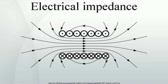A capacitor has a purely reactive impedance which is inversely proportional to the signal frequency. A capacitor consists of two conductors separated by an insulator, also known as a dielectric. At low frequencies a capacitor is open circuit, as no charge flows in the dielectric. A DC voltage applied across a capacitor causes charge to accumulate on one side; the electric field due to the accumulated charge is the source of the opposition to the current. When the potential associated with the charge exactly balances the applied voltage, the current goes to zero. Driven by an AC supply, a capacitor will only accumulate a limited amount of charge before the potential difference changes sign and the charge dissipates. The higher the frequency, the less charge will accumulate and the smaller the opposition to the current.